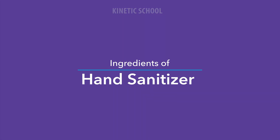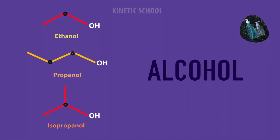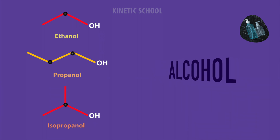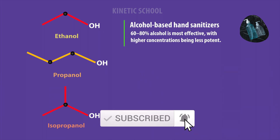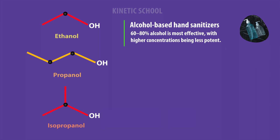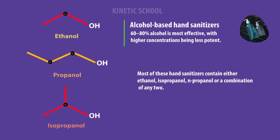Ingredients of hand sanitizer. The main ingredient of hand sanitizer is alcohol. For alcohol-based hand sanitizers, 60-80% alcohol is most effective, with higher concentrations being less potent. Most of these hand sanitizers contain either ethanol, isopropanol, n-propanol, or a combination of any two.